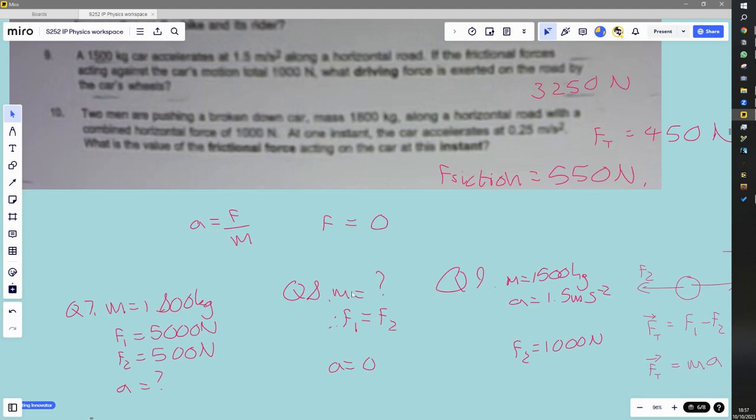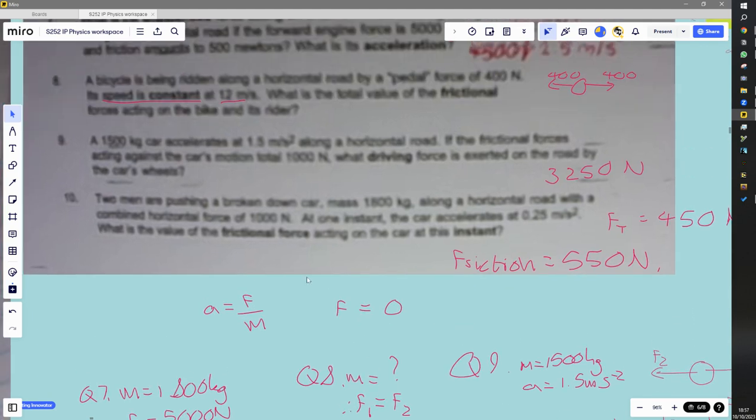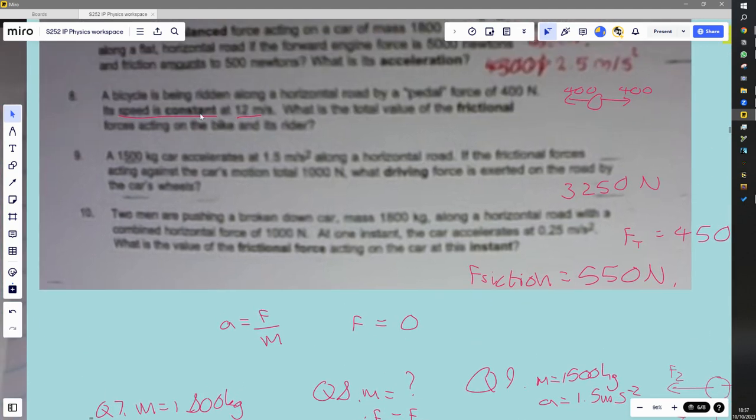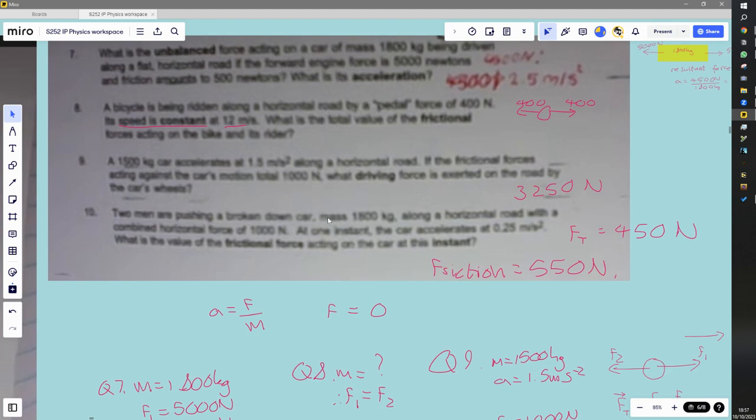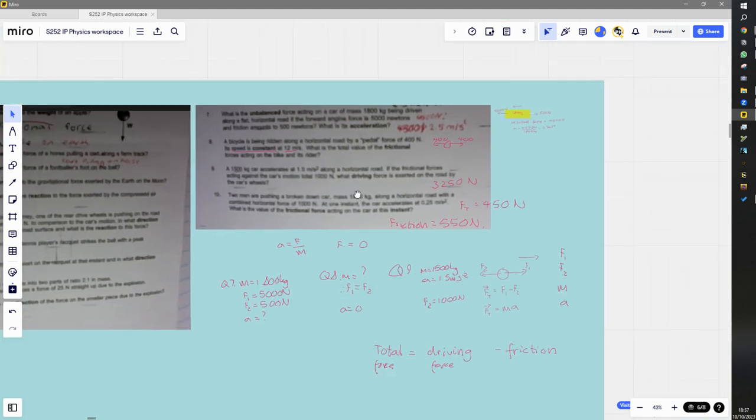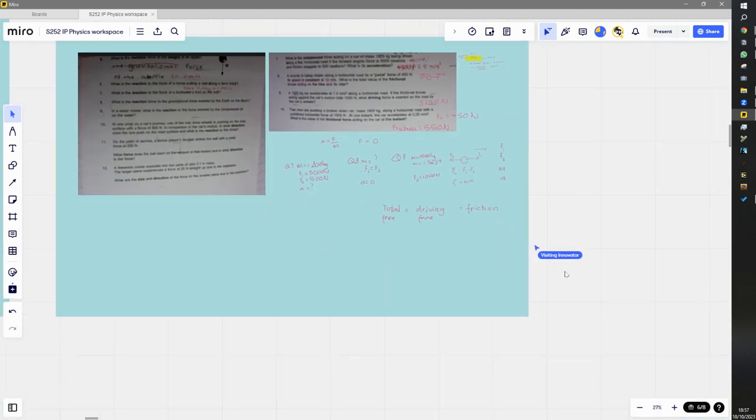Question eight was a slightly different one because we realized that it had the speed constant, so therefore the acceleration is zero. If the acceleration is zero, then the force must be zero. And if the force is zero, then the resistive force was the same as the pedal force. So that's how we identified that one. Anyway, yeah, we'll keep working through this next lesson.